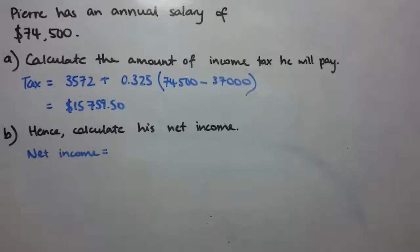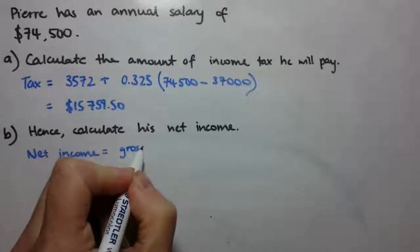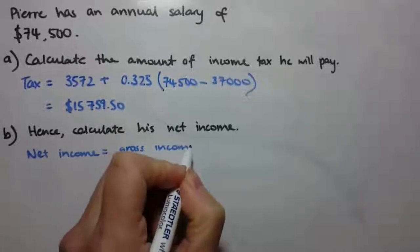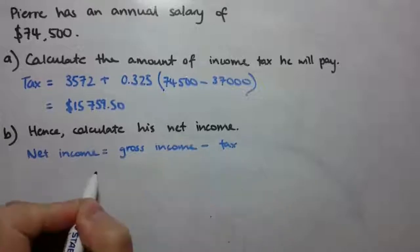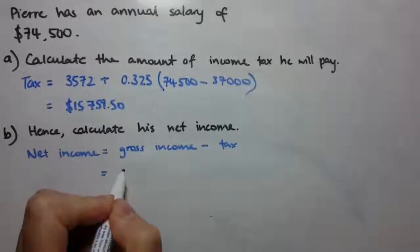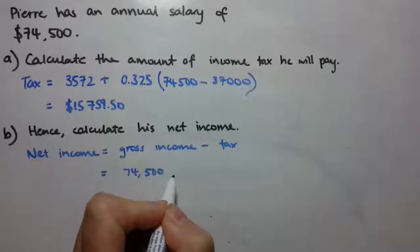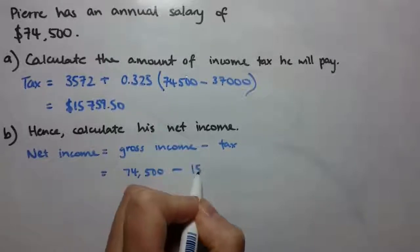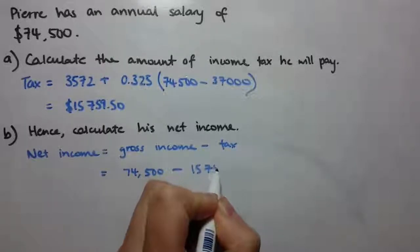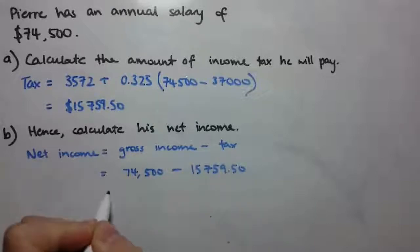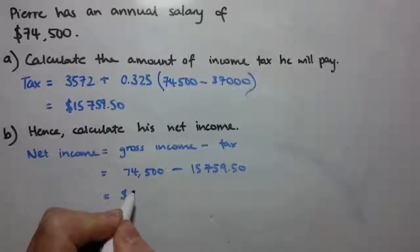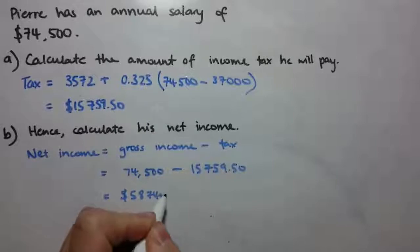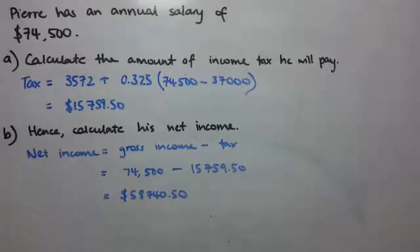The second part of the question asks us to calculate his net income. Net income is simply his gross income — his taxable income — minus the tax. He makes $74,500 and he's paying $15,759.50 in tax, so he is going to take home $58,740.50 in net income.